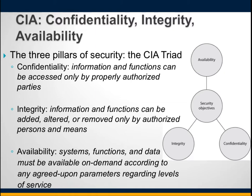Integrity provides the accuracy of information and gives users confidence that information has not been tampered with. Integrity needs to be protected while data is at rest or in transit. Real-life examples include different types of hashing algorithms and cryptography. Finally, availability requires that information and systems be available whenever they are needed.